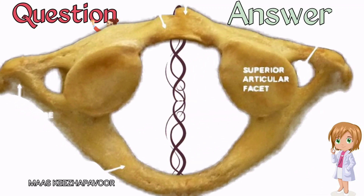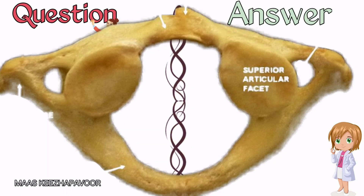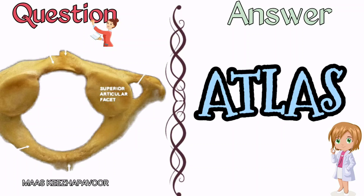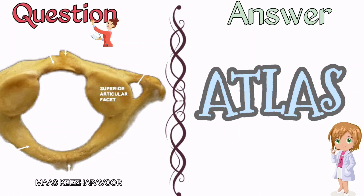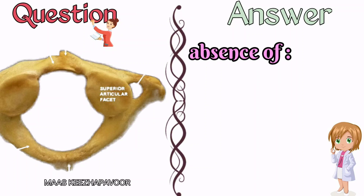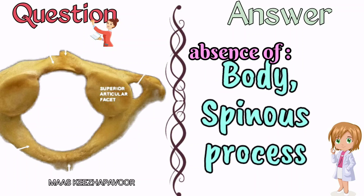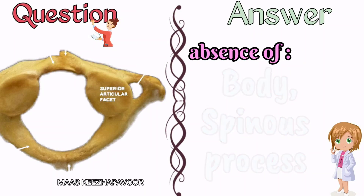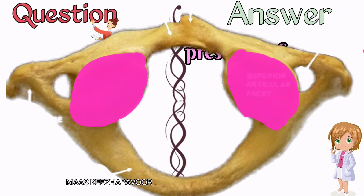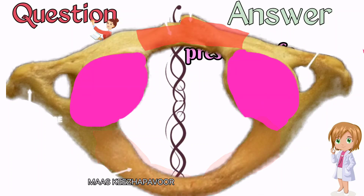Identify the given bone and prove your answer with salient features. The given bone is atlas, the first cervical vertebra. Absence of body and spinous process. Presence of lateral masses connected by narrow anterior arch and broad posterior arch prove that this bone is atlas.